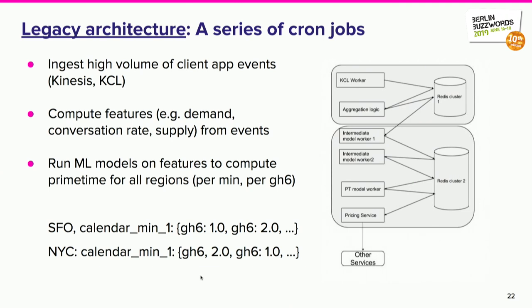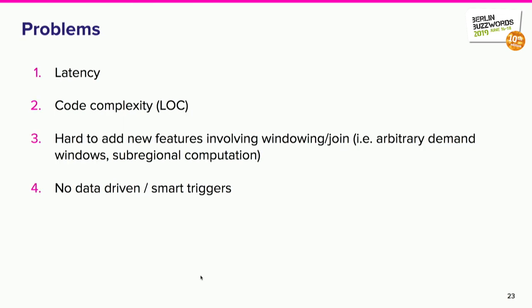This means latency on every stage. It's not data-driven — it's driven by a cron schedule — and the system architecture is fairly brittle because it cannot be easily changed. Adding new features is also difficult. Code complexity comes from having to write code for all this scheduling and coordination that you would not normally find in a streaming pipeline.